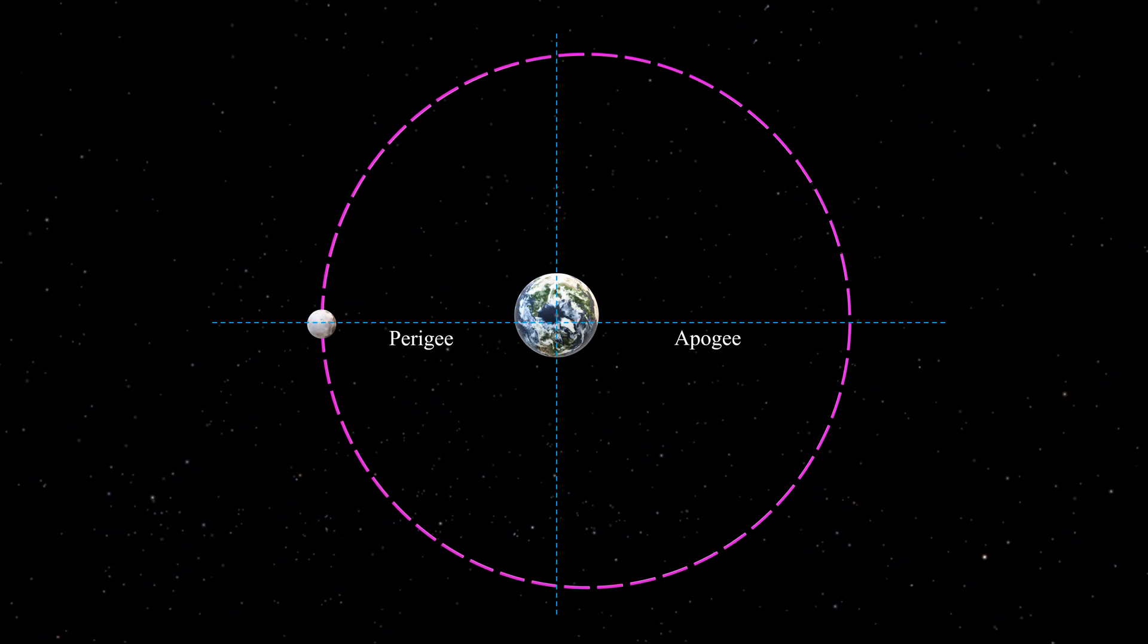Perigee is the point in the moon's orbit when it is closest to the Earth. Apogee is the point in the moon's orbit when it is farthest from the Earth. The moon travels faster when it is closest to the Earth and slowest when it is farthest away.